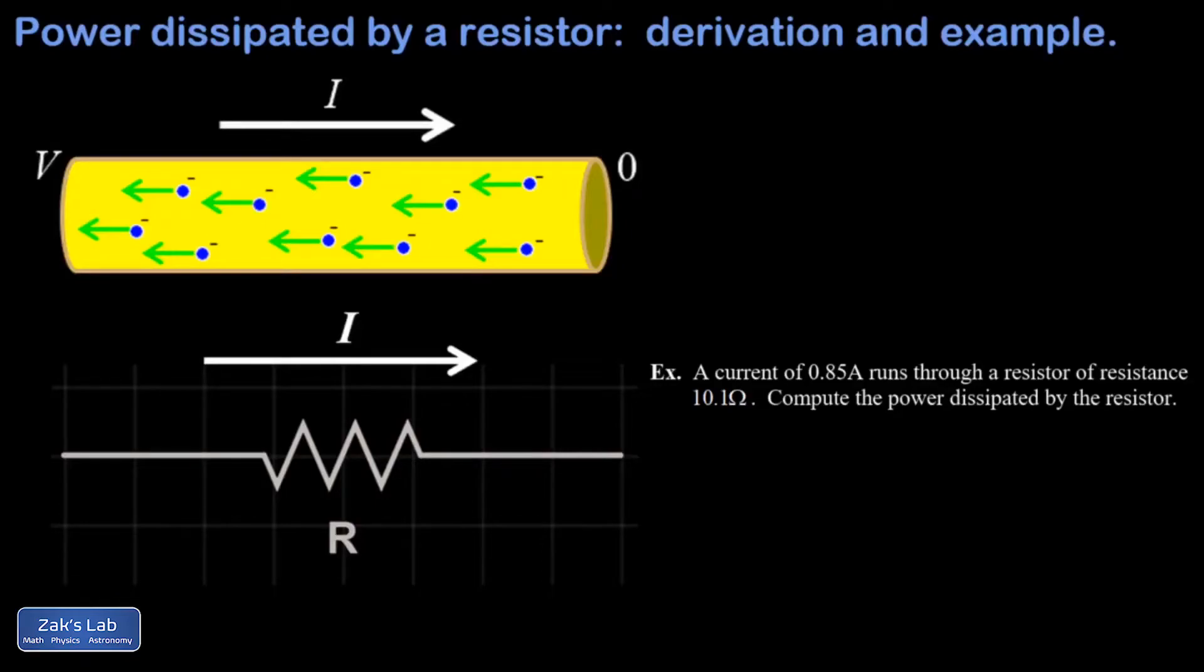In this video, we're going to start by talking about the physical reason that resistors dissipate power. Then we're going to calculate how much power resistors dissipate if there's a current flowing through them, and then we'll wrap things up with a simple example.